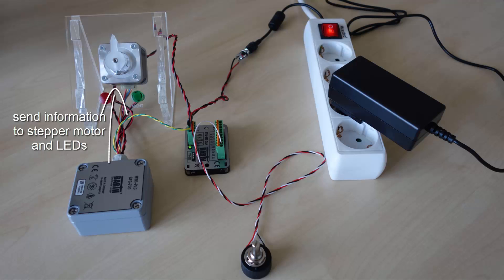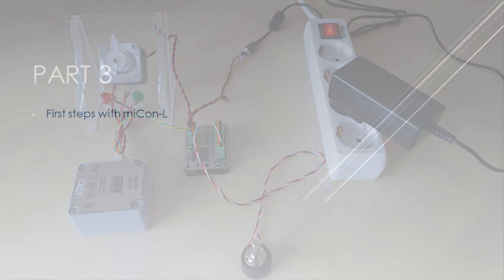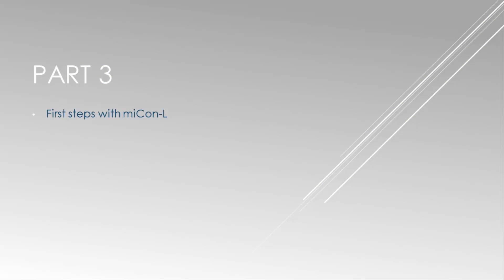So when twisting the potentiometer to the right, the green LED will light up. See you in the next video how to get started with the graphical programming software miCon-L.